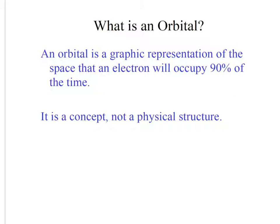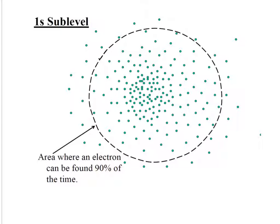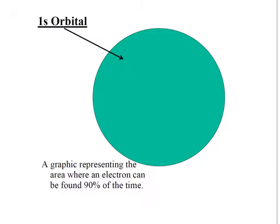So what is an orbital? It's just a graphic representation of the space an electron occupies 90% of the time. It's more of a concept than a physical structure. Here's the orbital. They spend most of the time in this path. So here's a graphic representation of a 1s orbital. It's a sphere.